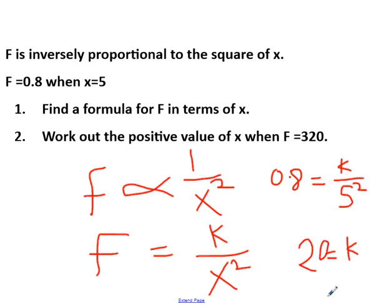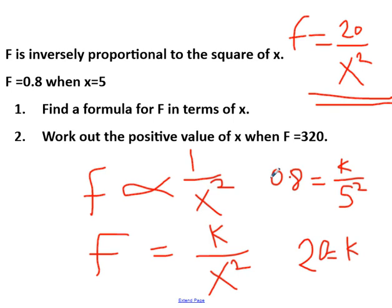We know what our constant of proportionality is now. The question asks us to find the formula for f in terms of x. To write the formula, f equals 20 over x squared. This is the formula. This is a proper GCSE question. The second part asks: what is the positive value of x when f is 320? If we replace f with 320, we get 320 equals 20 over x squared.